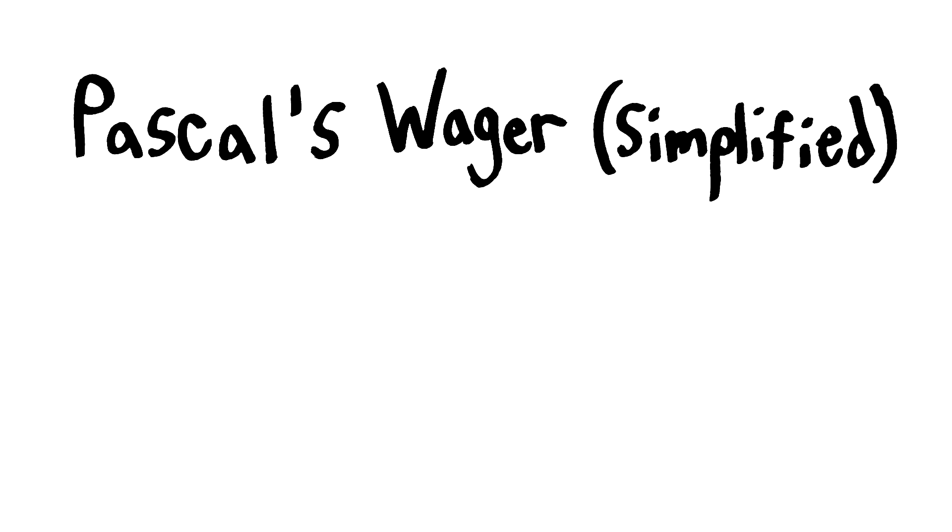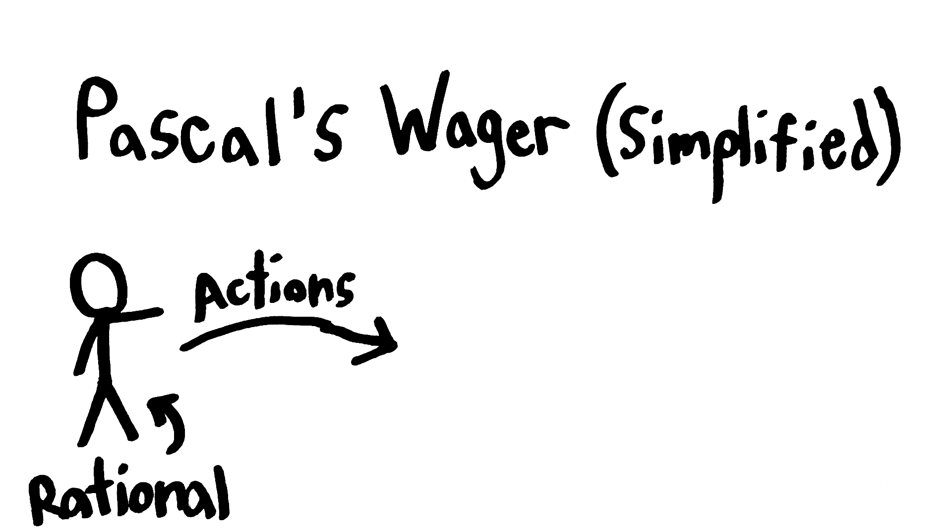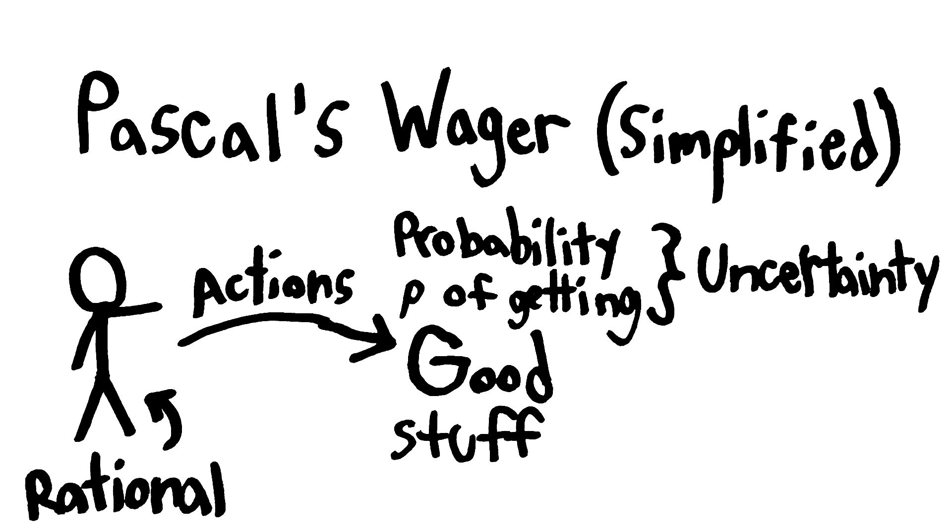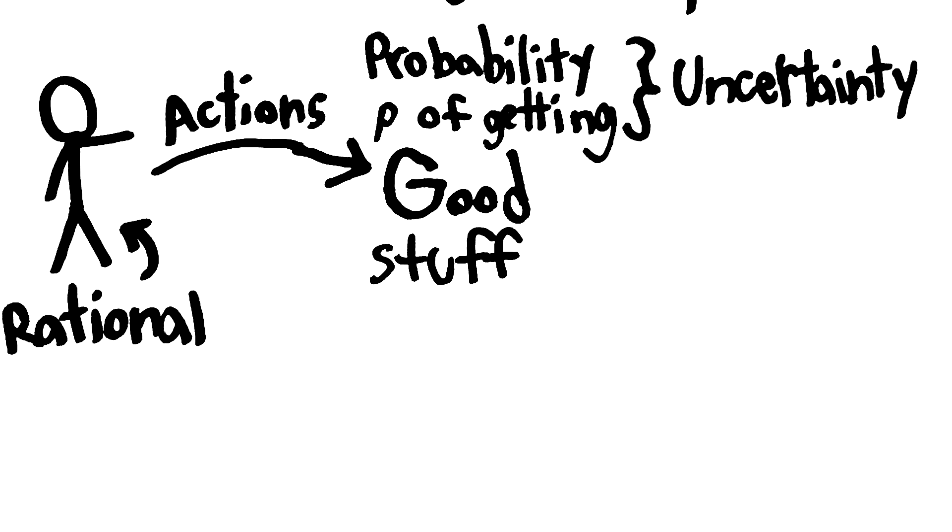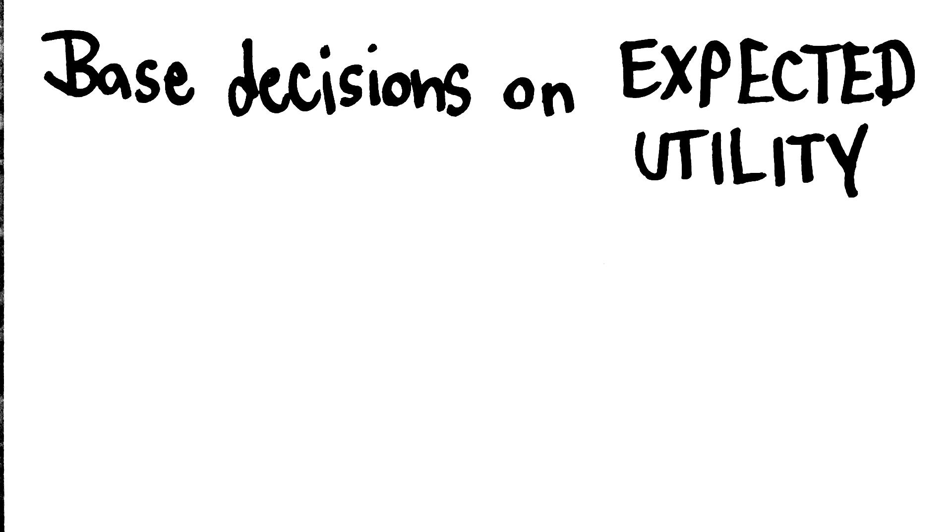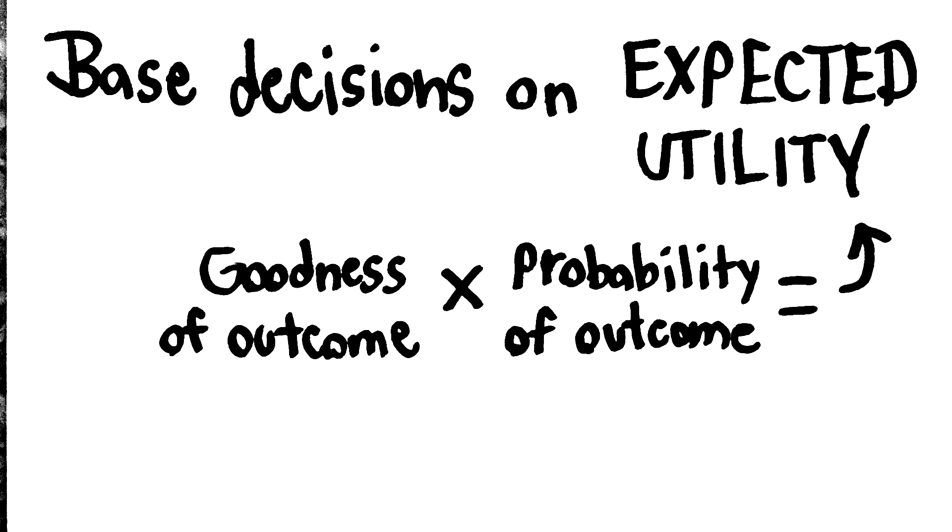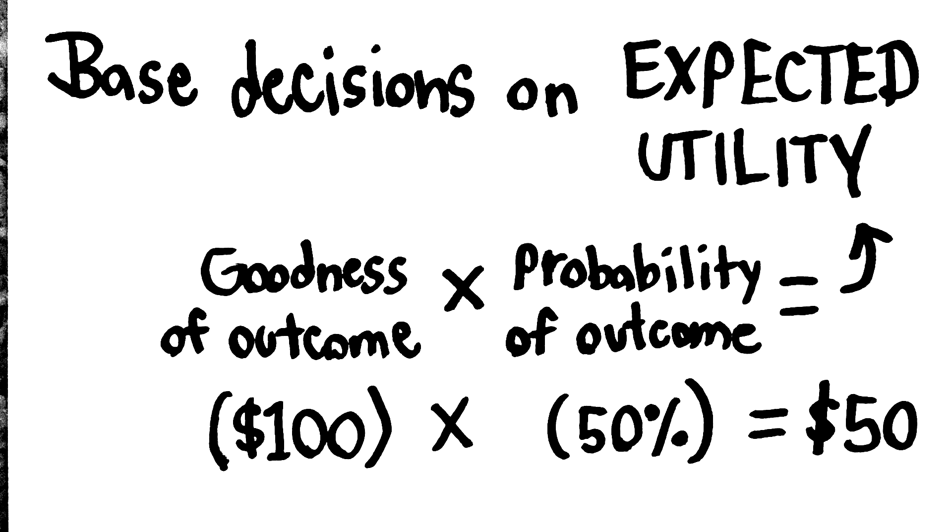But first, here's Pascal's wager in a nutshell. Rational people perform actions that lead to good outcomes. However, life has uncertainty, so we usually need to act not off the goodness or utility of an action's outcome, but by the expected utility of an action, which is found by multiplying the goodness of an outcome by the probability of getting that outcome. So an action which leads to $100 50% of the time has an expected utility of $50.